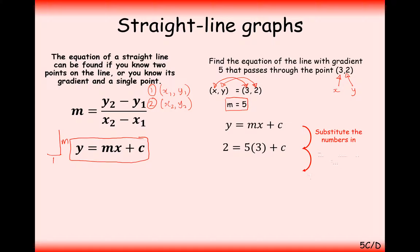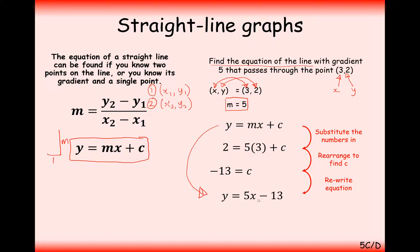We plug all our values in, take the 15 over to the other side, and we get c equals minus 13. The question asks us to find the equation of the line, so that's y equals mx plus c, where m is 5 and c is minus 13. We write out our final answer as y equals 5x minus 13, and this is the graph we're looking for.